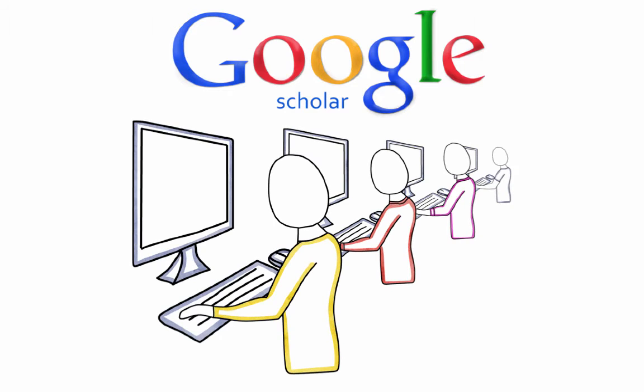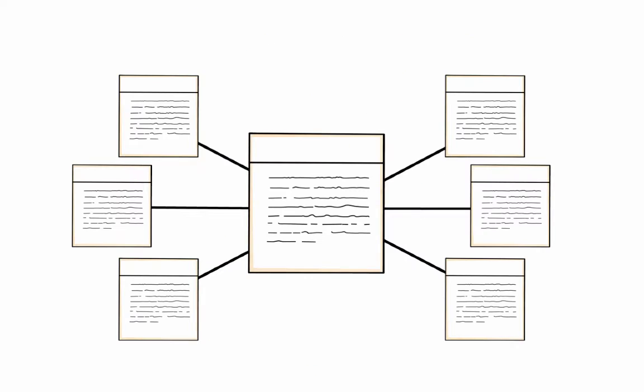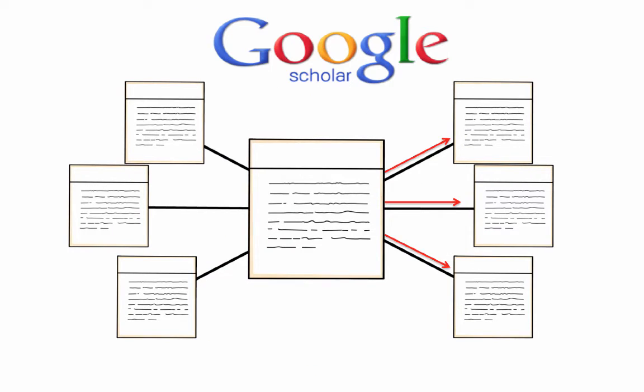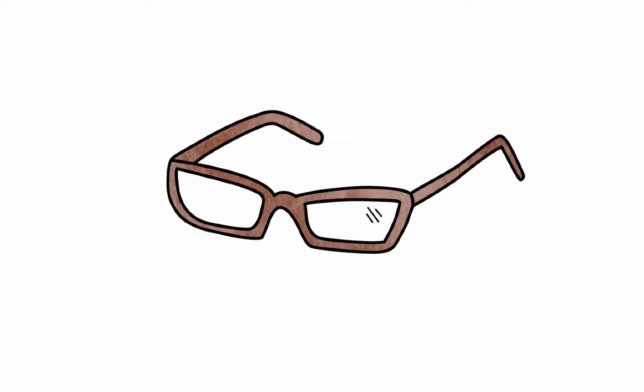Google Scholar is a database that provides you, the researcher, with article network information. In particular, Google Scholar makes forward networks visible to you.